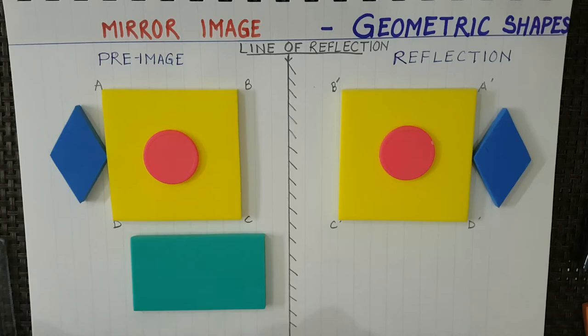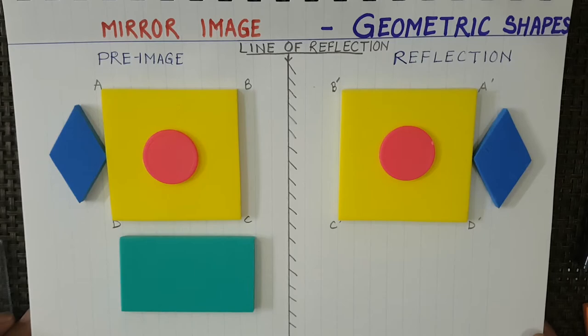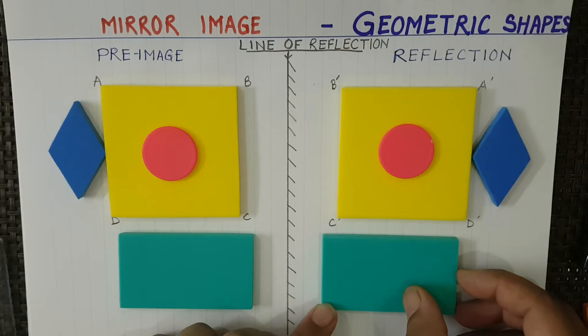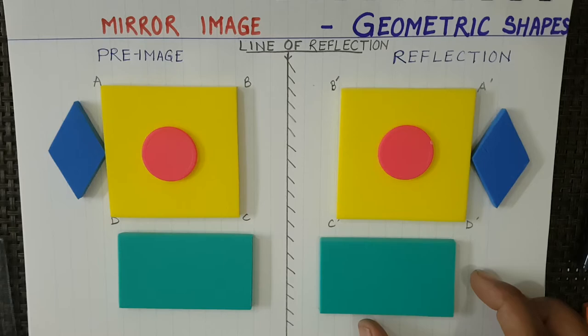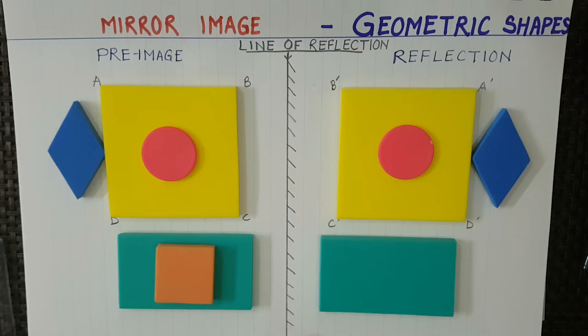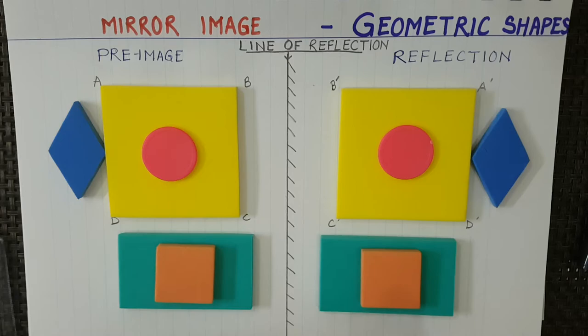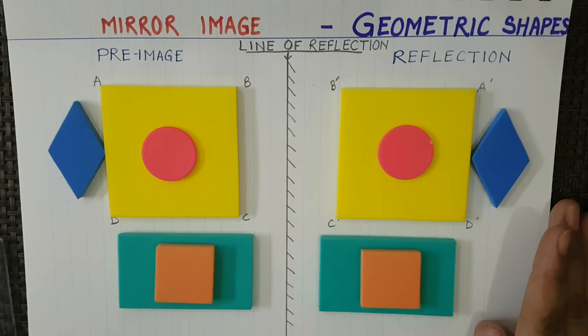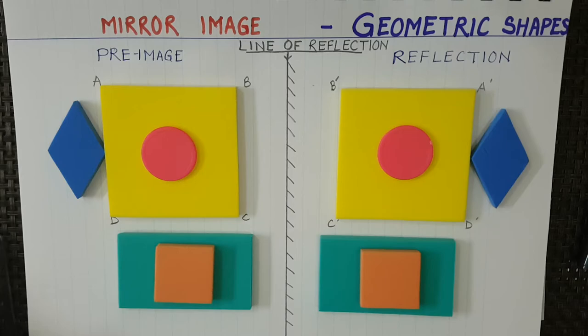Now let's look at a rectangle. How will its mirror image form? Now you also need to do this activity at home — take different shapes, see their reflection in a mirror, and draw it in your notebook. Tell me too! Look how the reflection of the rectangle is formed — isn't it fun? I have a small square as well. I have colored it in the middle. So these geometric shapes all have the same mirror reflection — no changes come in them.